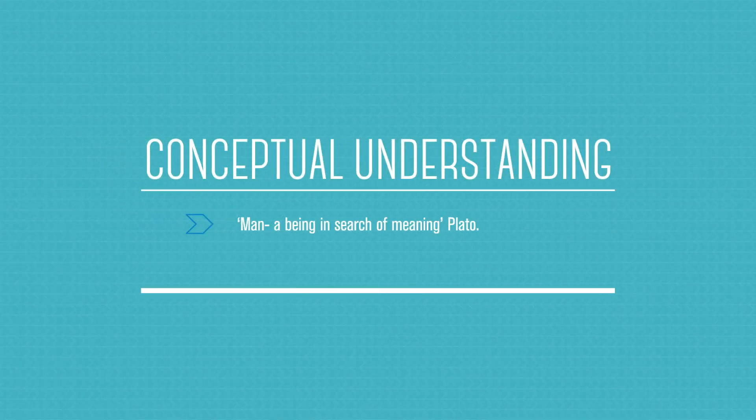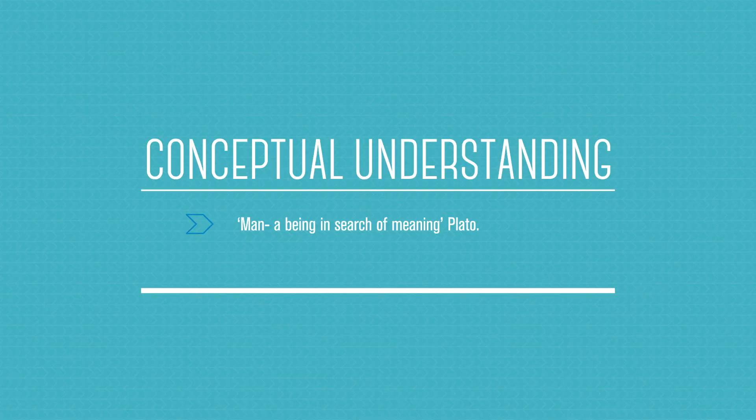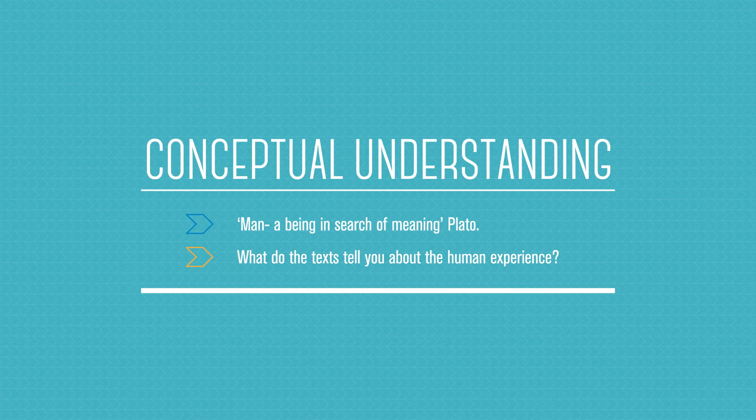I think this actually works: Plato once said, 'Man, a being in search of meaning.' If you look at the entire Stage 6 English course, it's actually grounded in humanism — grounded in, as Hamlet would have said, 'What a piece of work is a man.' So you ask this question: what do the texts tell you about the human experience? If you ask that for Module A, B, or C, you're going to find you'll start to understand the key ideas, it'll be less challenging, and I'll come back to this notion of what do the texts tell you about the human experience.